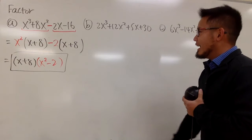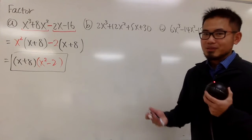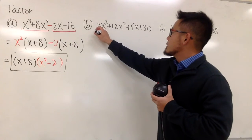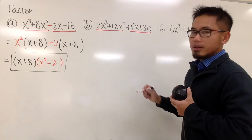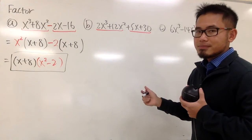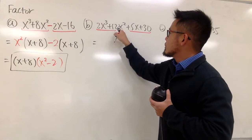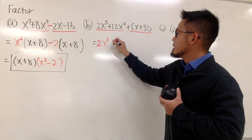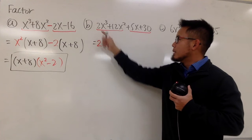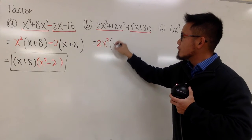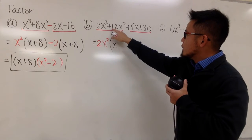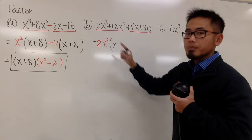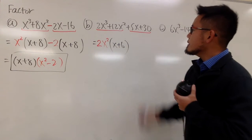Now let's do the second one. If you'd like to try this first, be sure to pause the video and work it out. Let's group the first two and second two. For this one, we see 2 and 12, so I can factor out 2, and x to the third and x squared means I can factor out x squared — giving 2x squared overall. Originally we had 2x cubed, so factoring out 2x squared leaves x. And 12x squared divided by 2x squared gives plus 6.